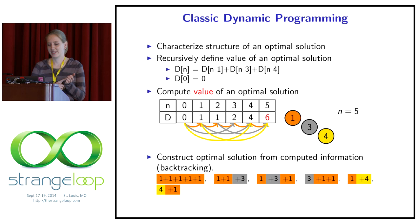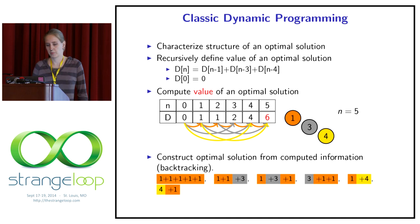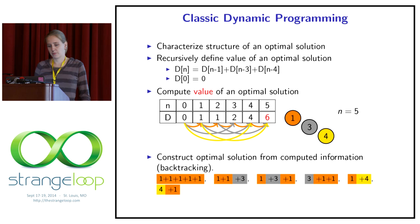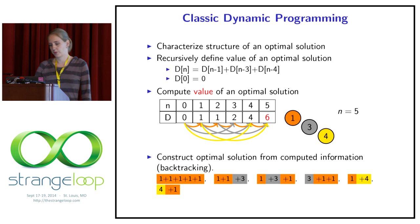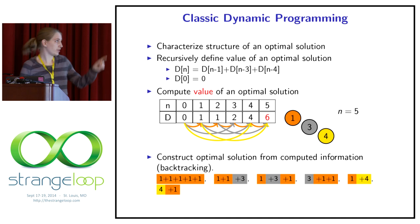For our money-changing problem, this would be the recurrence. We define d(n) in terms of some smaller sub-problems. Because we want to have a sum, we could say if we just subtract one of the coins — minus one, minus three, or minus four — we get a smaller sub-problem: a smaller sum that we then have to decompose. And if we are at zero, we are done — this is our base case, because zero we cannot decompose it further.